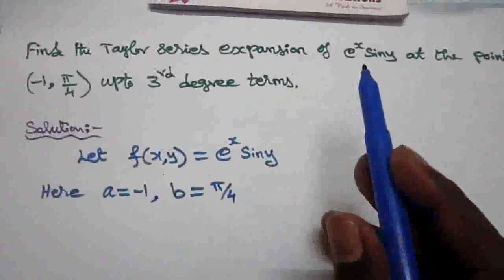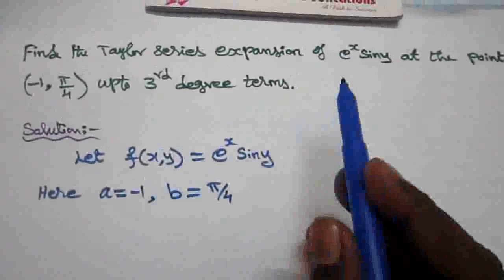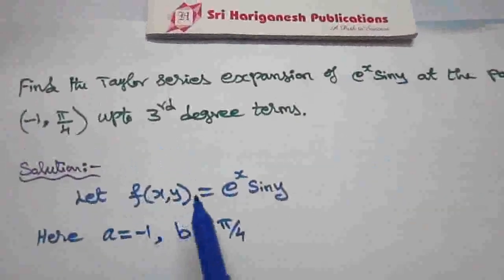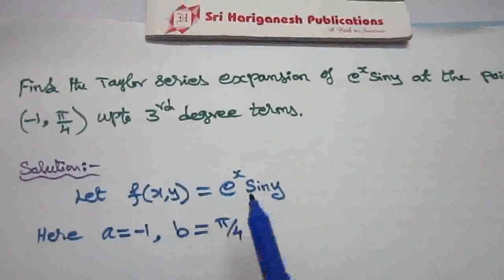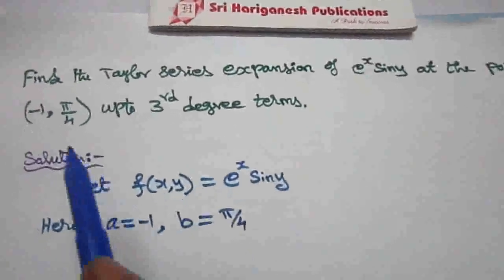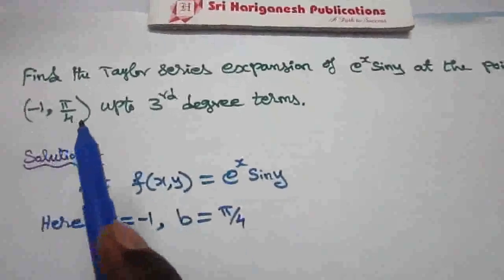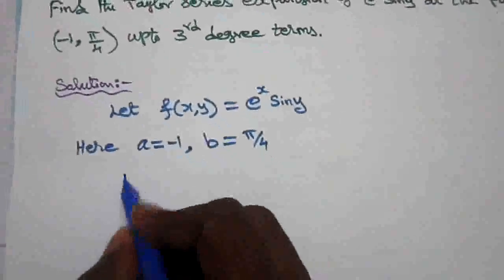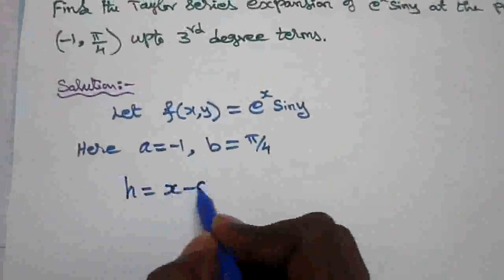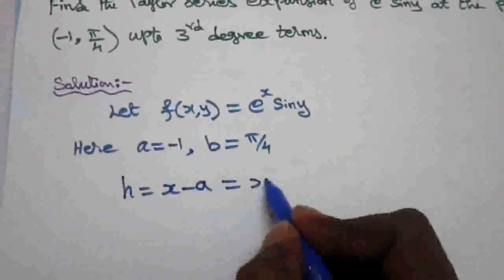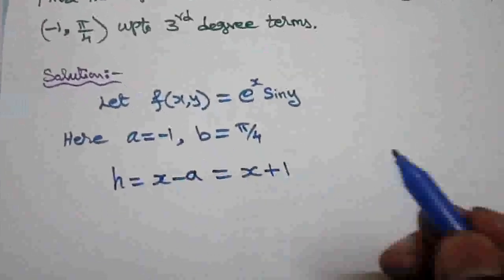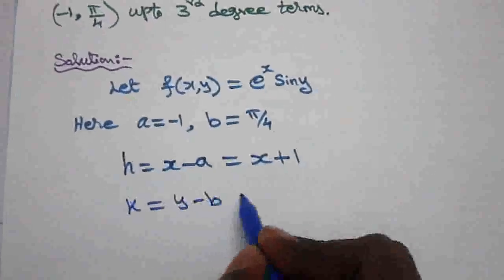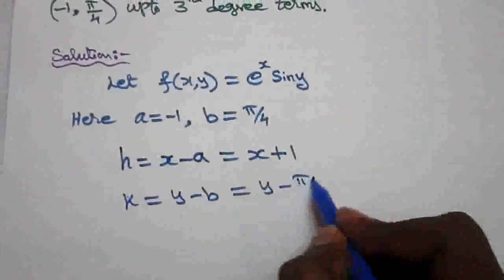To find the Taylor series expansion, assume the given function is f(x,y) = e^x · sin(y), involving two variables x and y. Here a = −1 and b = π/4. In the Taylor series expansion, h = x − a = x − (−1) = x + 1, and k = y − b = y − π/4.